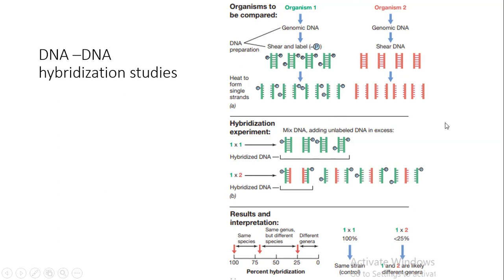In the hybridization experiment, in the first set we mix the DNA from the first organism with the unlabeled DNA of the first organism itself, and in the second set we mix the DNA of the first organism with the unlabeled DNA of the second organism. We then allow hybridization to take place and interpret our results. The self-hybridization with the same organism serves as a control for our experiment.